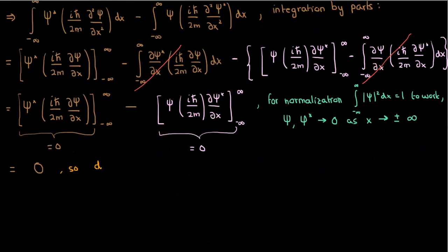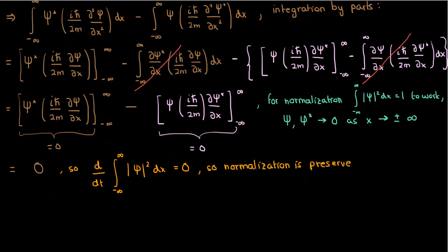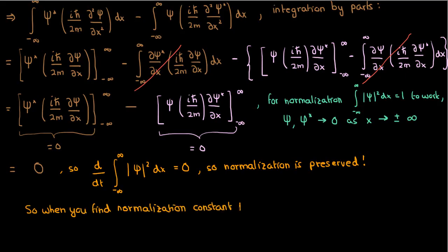Therefore, the time derivative of the normalization integral is zero, which means the normalization integral stays constant with time. The nature of Schrödinger's equation is such that normalization is always preserved, and so we've completed the proof. The implications of this theorem are that once you've found the normalization constant A once, you don't need to find it again — because normalization is preserved, you're done.